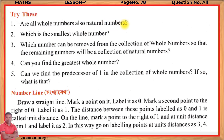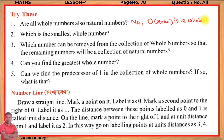Question number 1: Are all whole numbers also natural numbers? The answer is no. Because 0 is a whole number — the first whole number is 0 — but 0 is not a natural number.